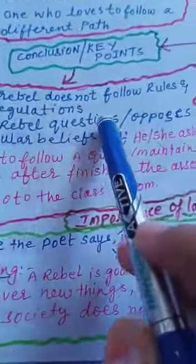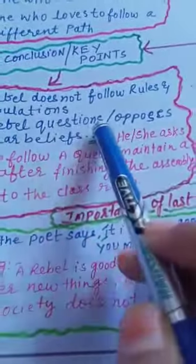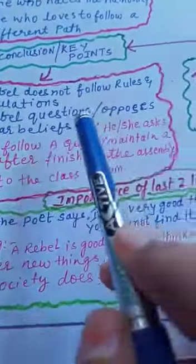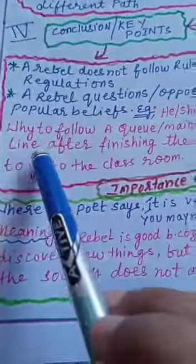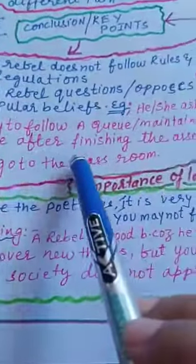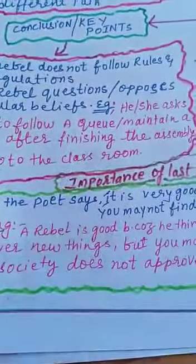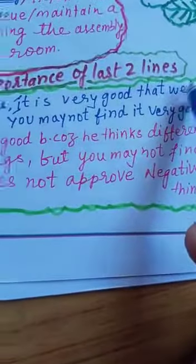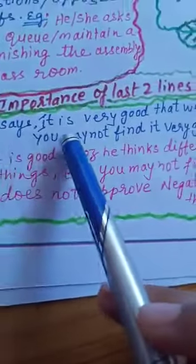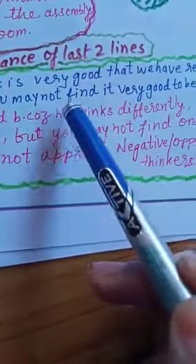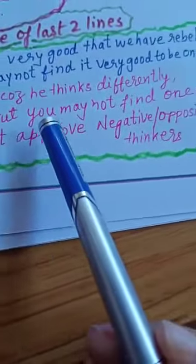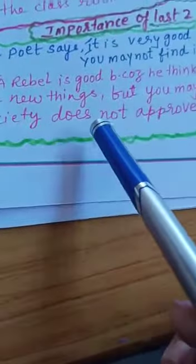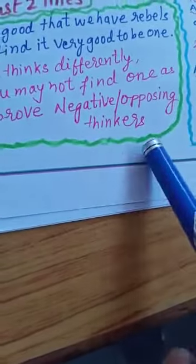Conclusion and key points: A rebel does not follow rules and regulations. A rebel questions or opposes popular beliefs. For example, he or she asks why to follow a queue or maintain a line after finishing the assembly to go to the classroom. The importance of the last two lines is where the poet says it is very good that we have rebels, but you may not find it very good to be one. Meaning: a rebel is good because he thinks differently and discovers new things, but society does not approve of opposing thinkers.